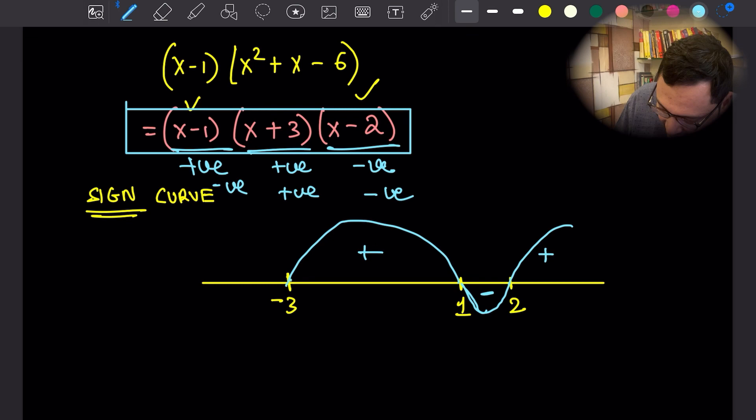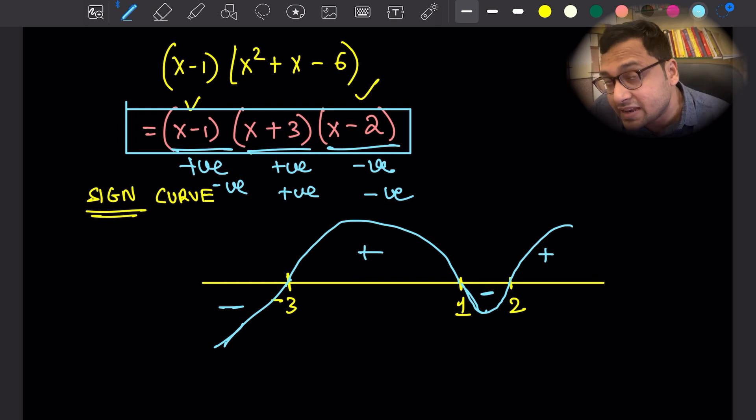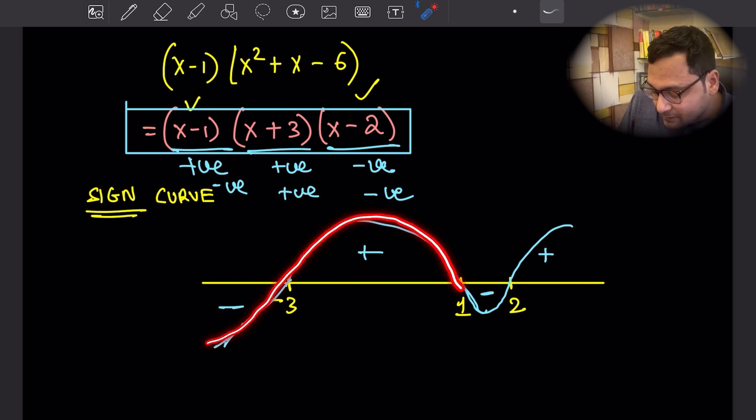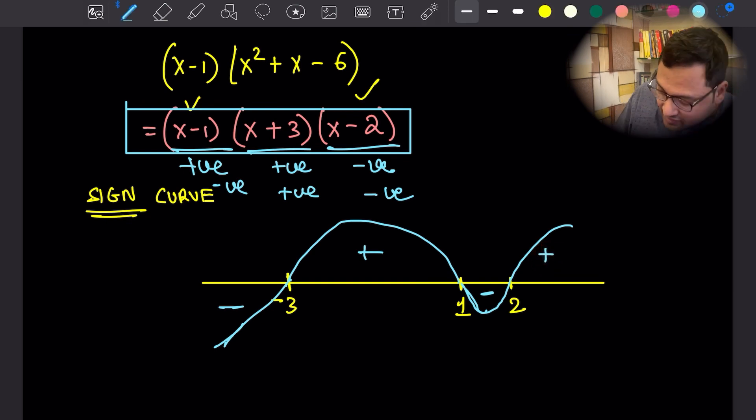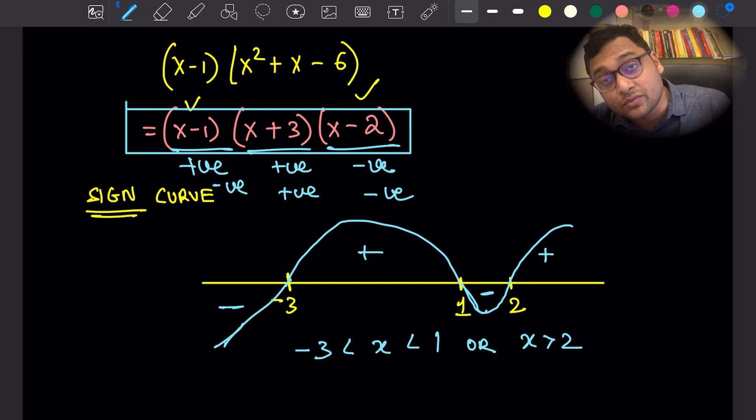Finally, when it is smaller than negative three, all three of the factors will be negative. So we have the product as negative. This is the sign curve and it will help us to understand the positivity or the negativity of the entire cubic expression. We see that it is positive when x is greater than two and it's positive between negative three and one.